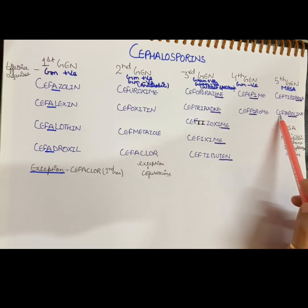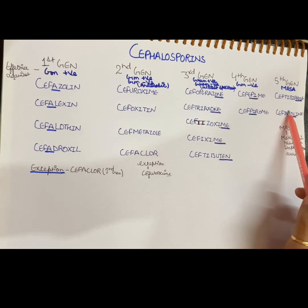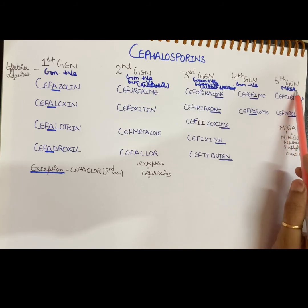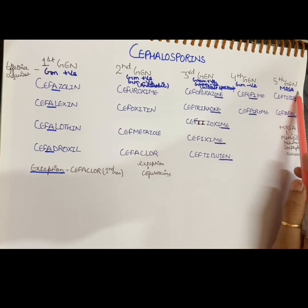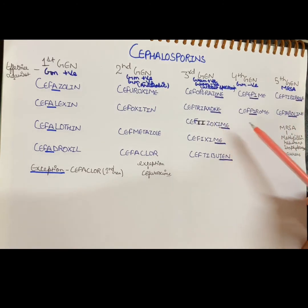Now moving to the fifth generation: what we have seen here is 'ROL' found after Ceph. For example, Ceftaroline — you find 'ROL', so it belongs to the fifth generation.